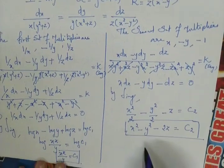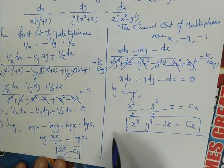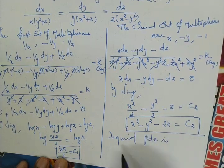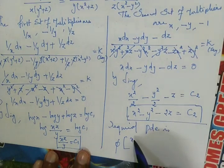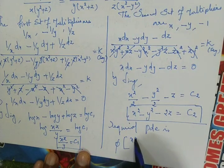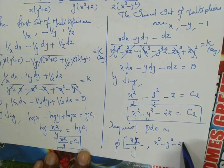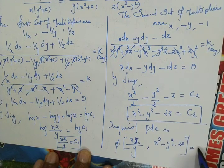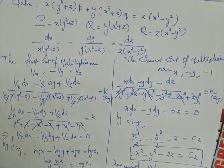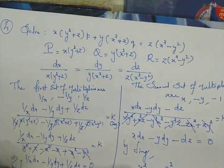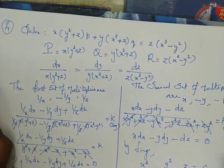Combining both results, the final required PDE solution is φ(xz/y, x² - y² - 2z) = 0. This completes the fourth problem on solving Lagrange's equation by the method of multipliers.